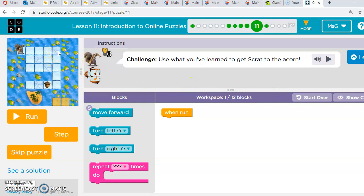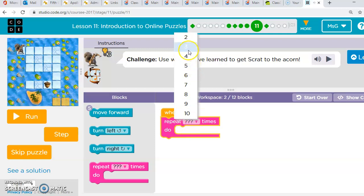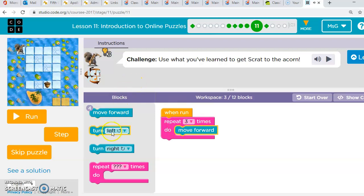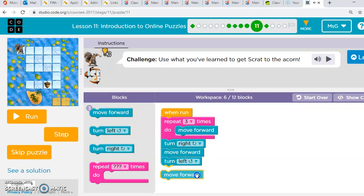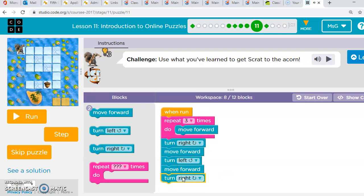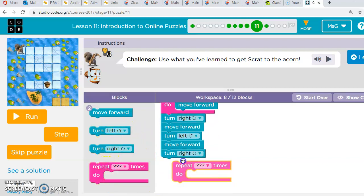So option A starts with a move forward three times inside of a repeat loop, then a turn right, and a move forward, and a turn left, and a move forward. Another turn right, and another turn right, and then we're going to repeat a move forward for three.